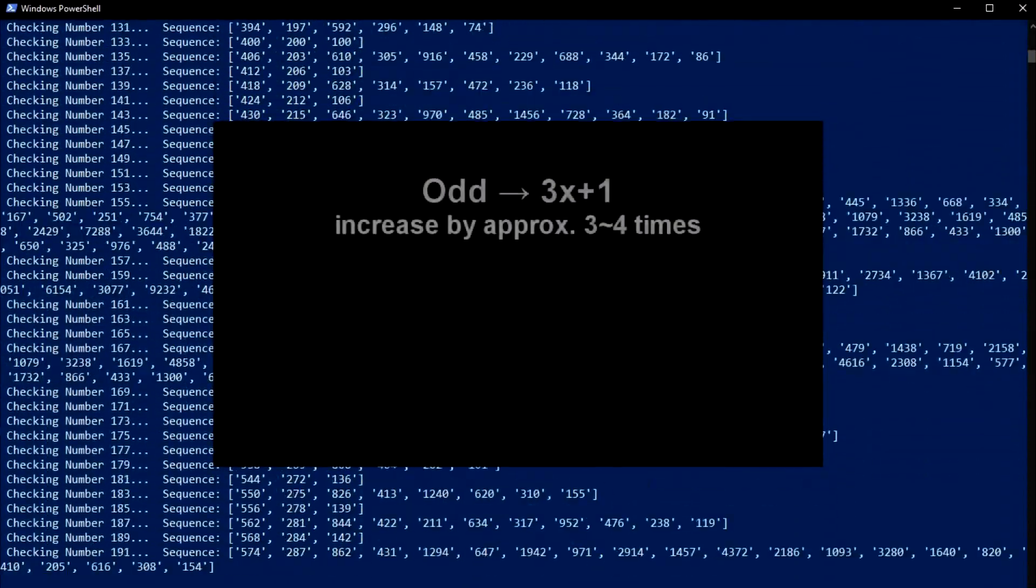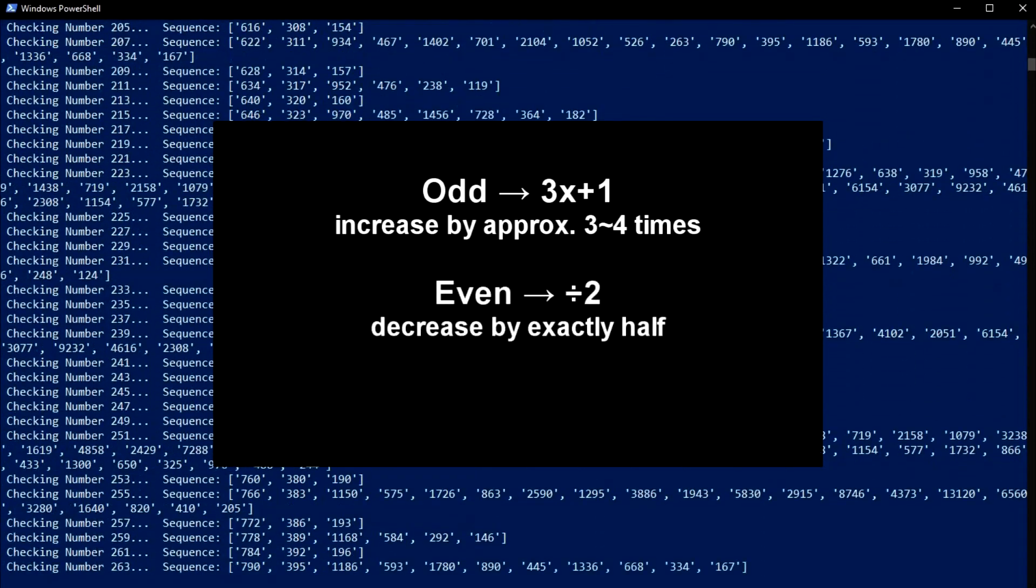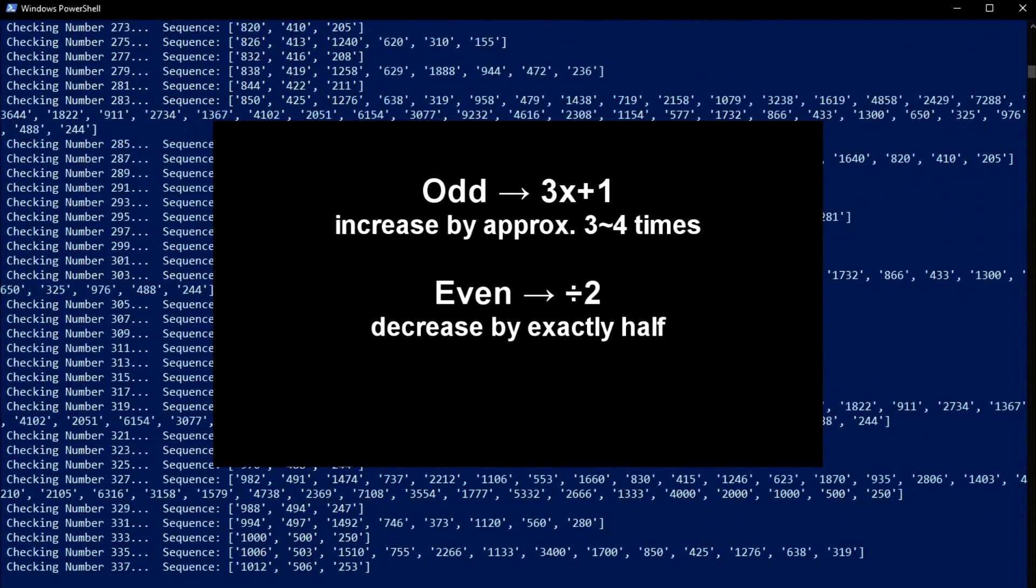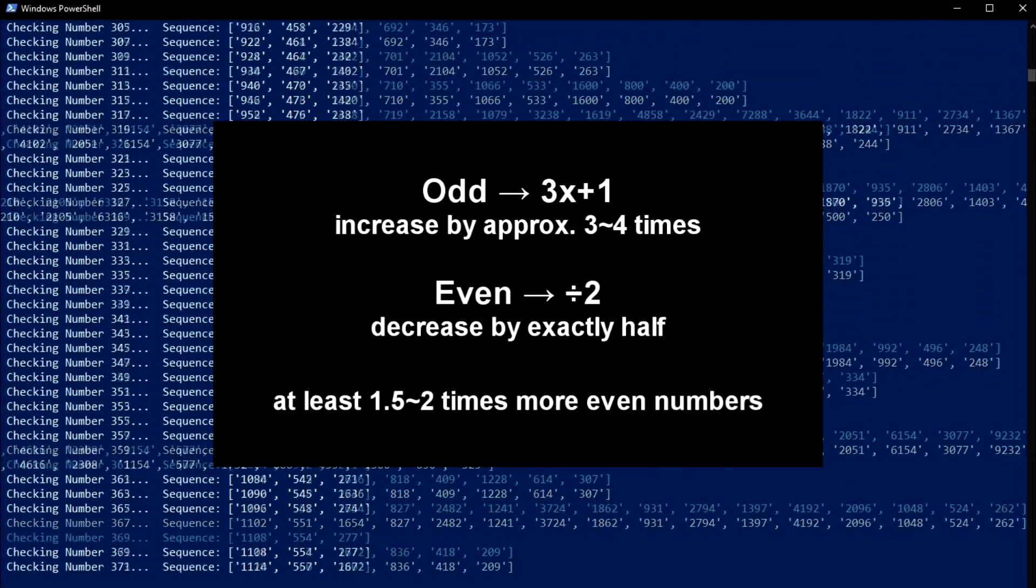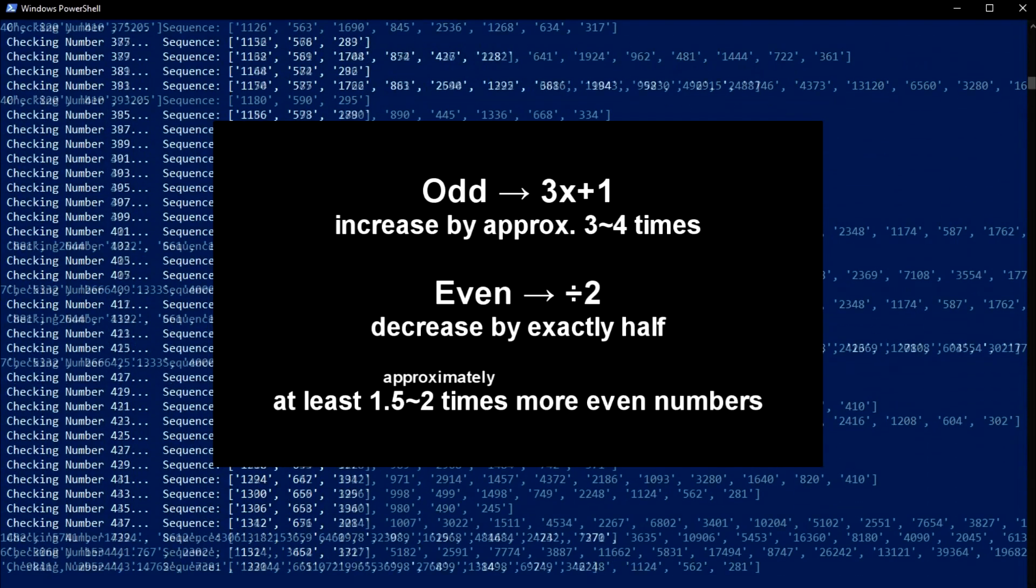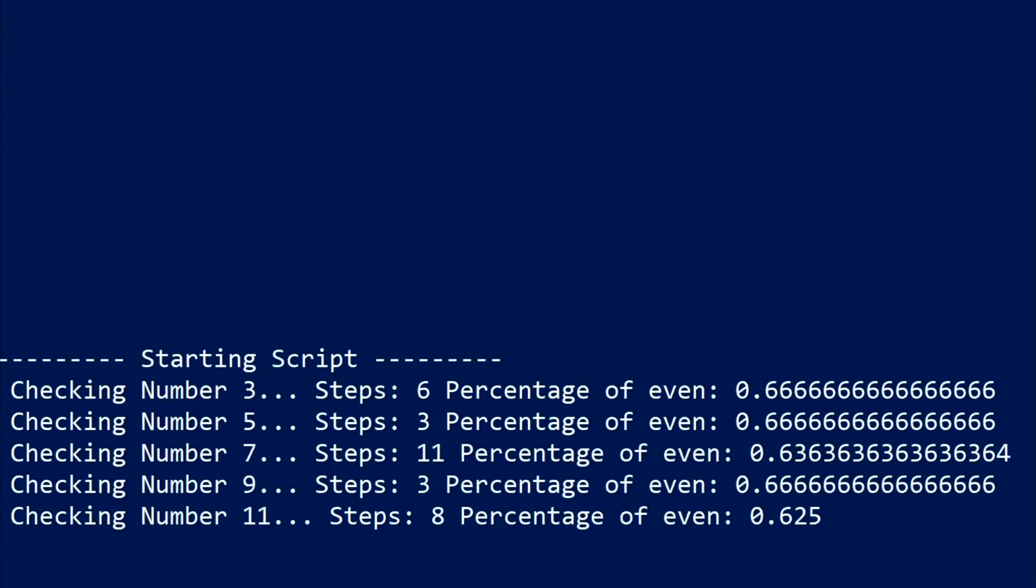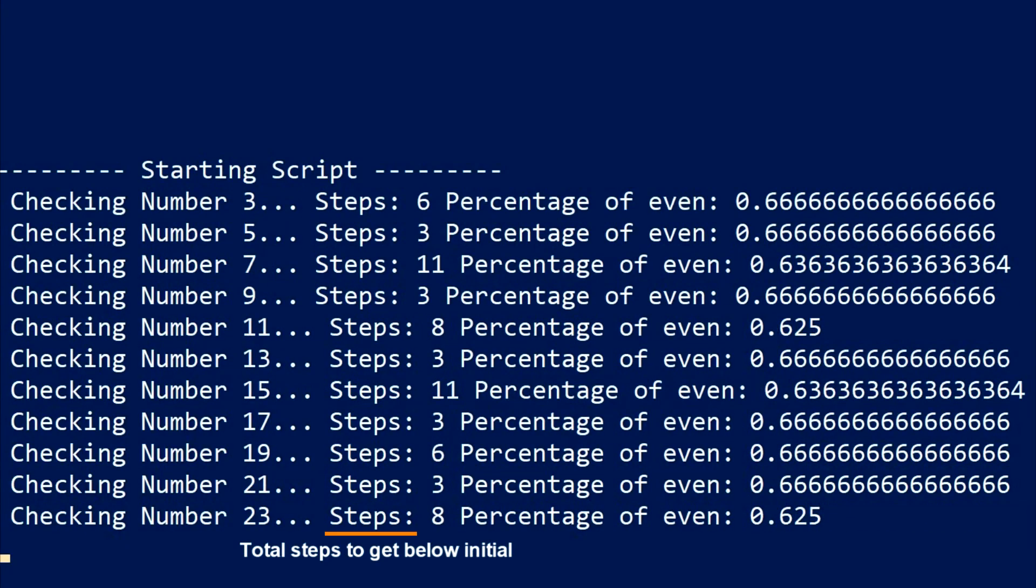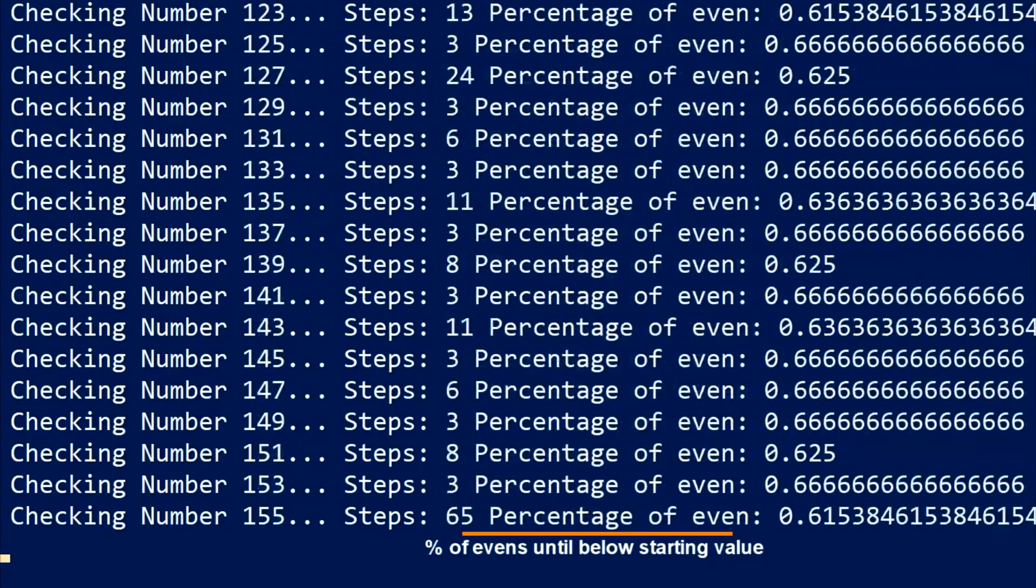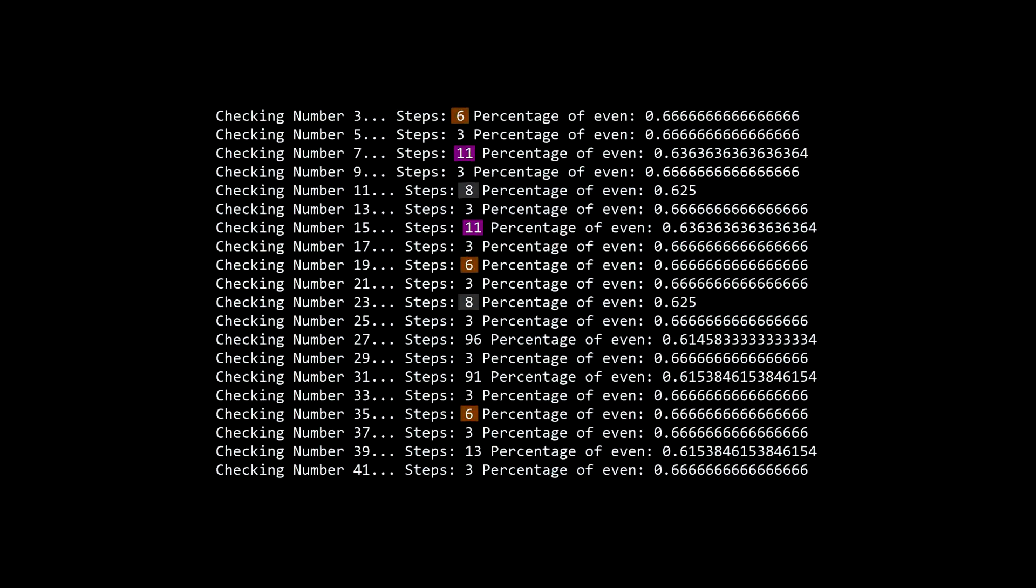Odd numbers increase the value by approximately 3-4 times, while even numbers decrease the value by exactly half. This means that for a number to eventually decrease below itself, there must be at least 1.5 to 2 times more even numbers, compared to odd numbers. I made some changes to display the total number of steps it took to get below the starting value, and the percentage of even numbers. We can immediately see that there are repeating total steps and repeating percentages.